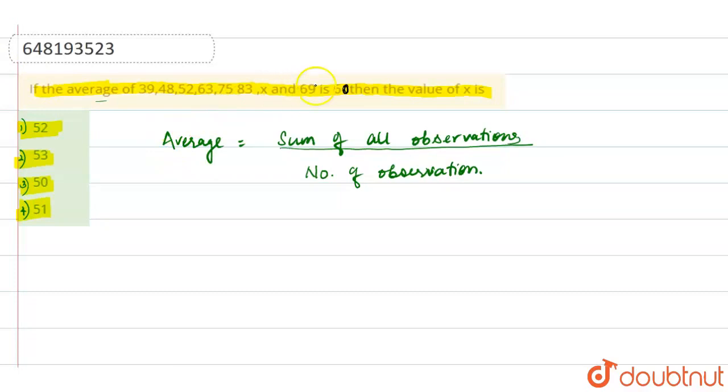In the question, the average given is 60, so average equals 60. And we will add the sum of all observations.